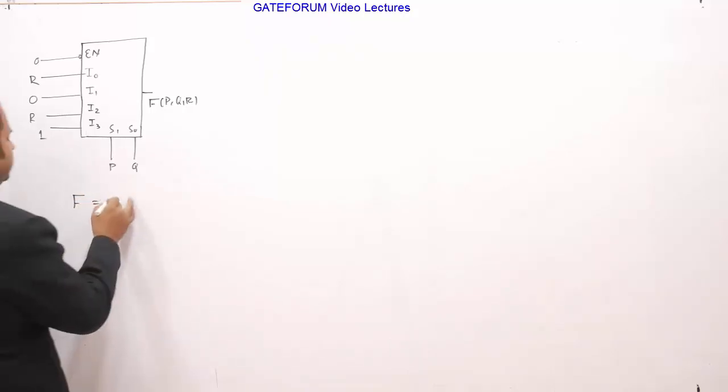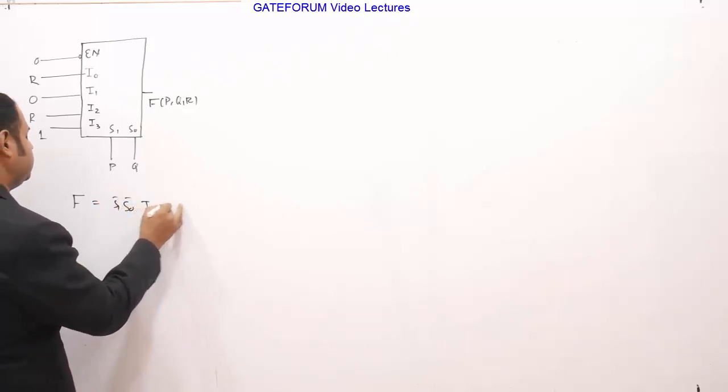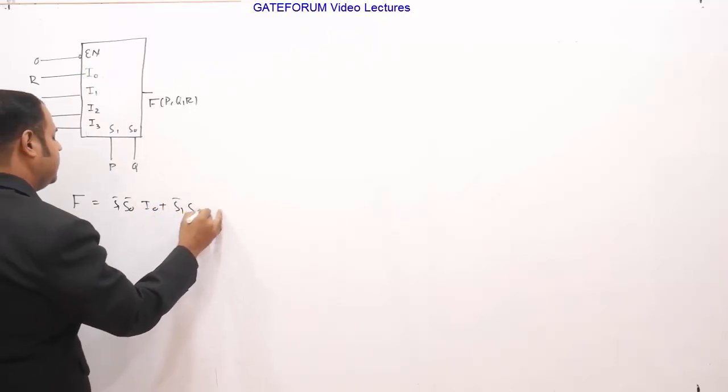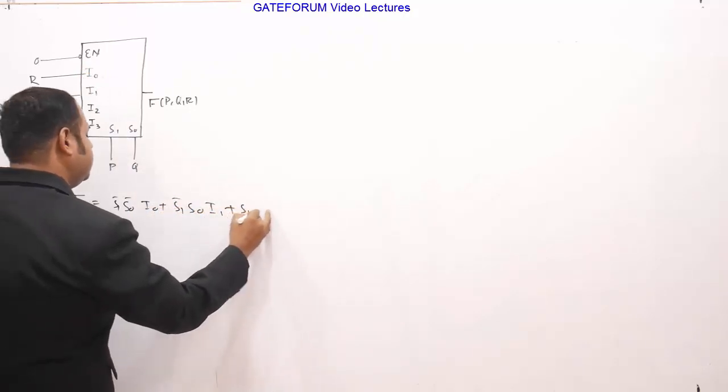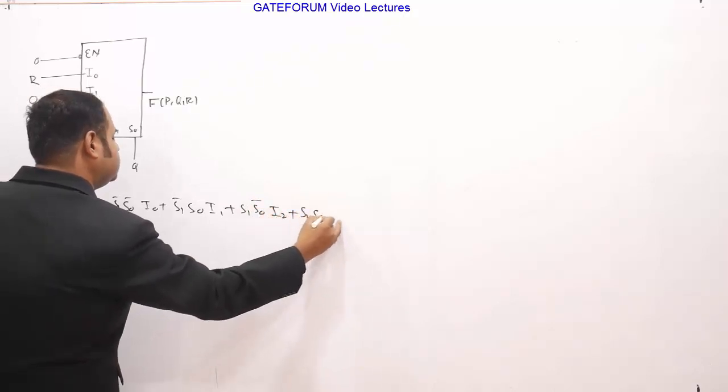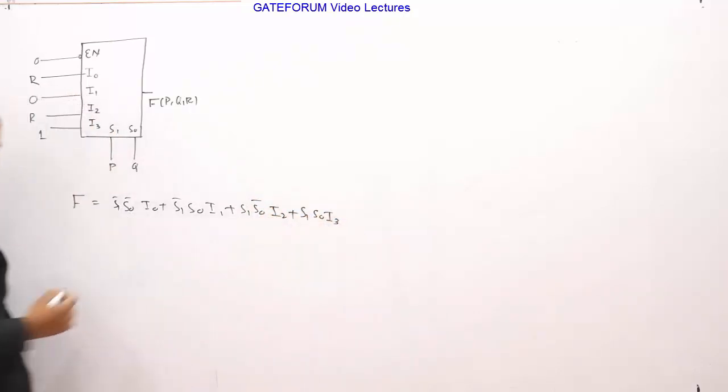So this is given by S1 bar, S0 bar, I0. Both are 00, it will select I0. S1 bar, S0, I1. S1, S0 bar, I2. S1, S0, I3. So this is a usual pattern, I don't think it's needed to explain.